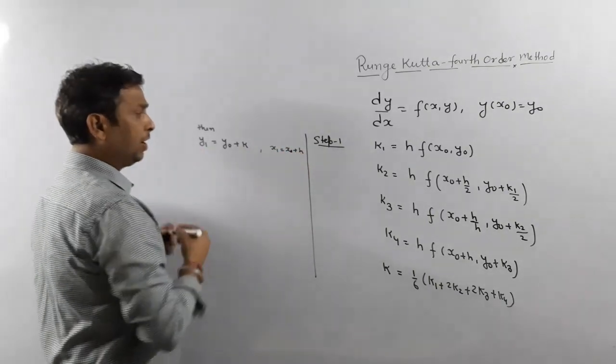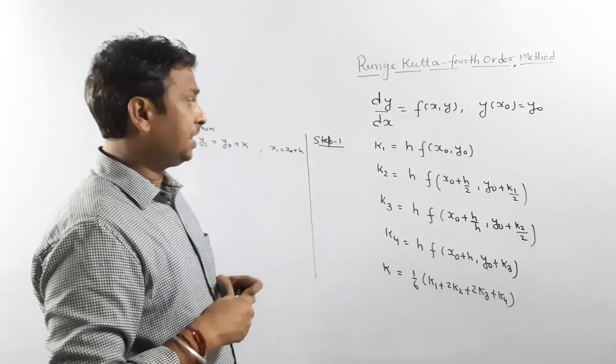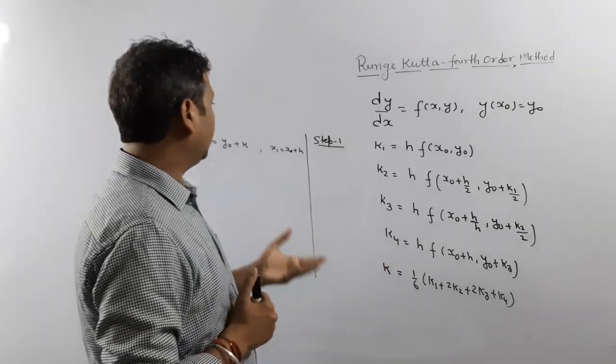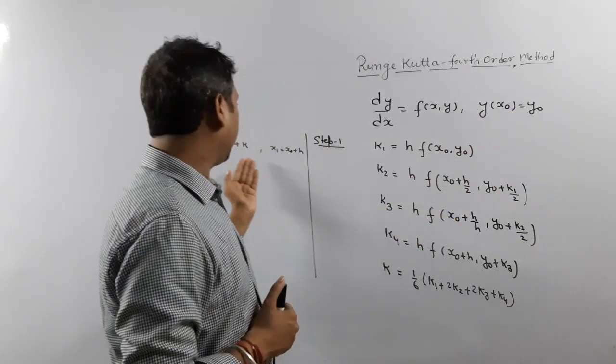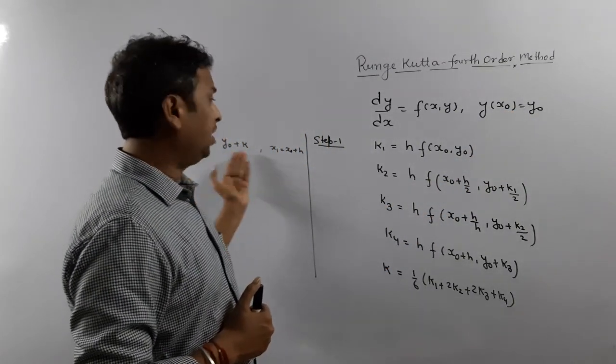Now we have x1, y1. Suppose they ask next iteration. Then no problem. We started with initial x0, y0. Now, in place of x0, y0, you take x1, y1.